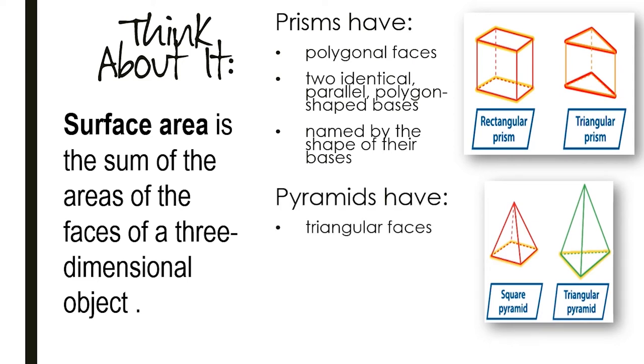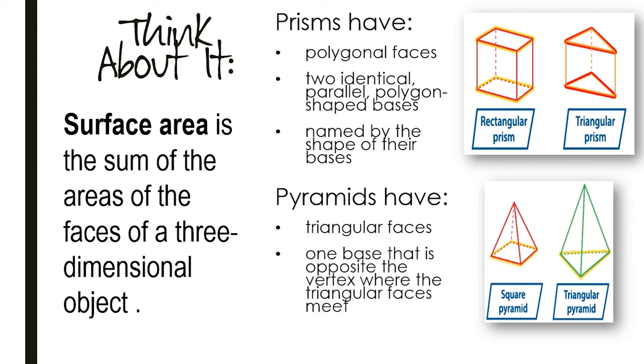Pyramids have triangular faces, one base that is the opposite of the vertex where the triangular faces meet, and are named by the shape of its base.